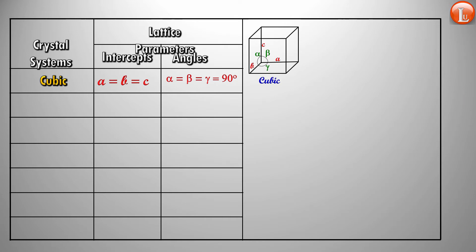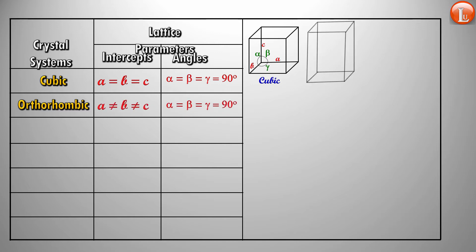The next is orthorhombic, which is traditionally called a cuboid. None of the three sides are equal, but all the angles are 90 degrees. That is orthorhombic.